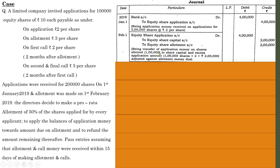Out of 2 lakh shares applied, 50% allotted is 1 lakh shares. So 1 lakh into 2 (application value per share) equals 2 lakhs transferred to equity share capital account, and the remaining 2 lakhs transferred to equity share allotment account. So 50% goes to equity share capital and the excess 2 lakhs goes to equity share allotment. The allotment value of rupees 3 per share will be considered only at the time of the second installment.